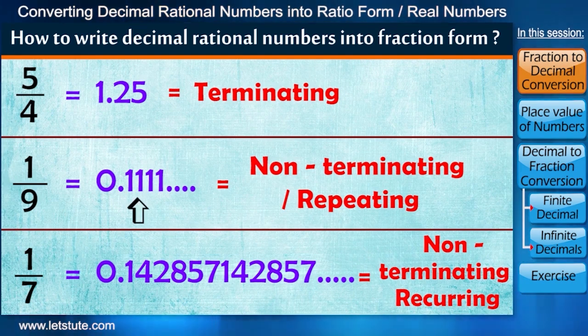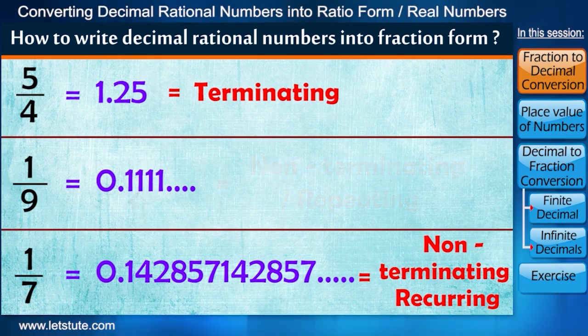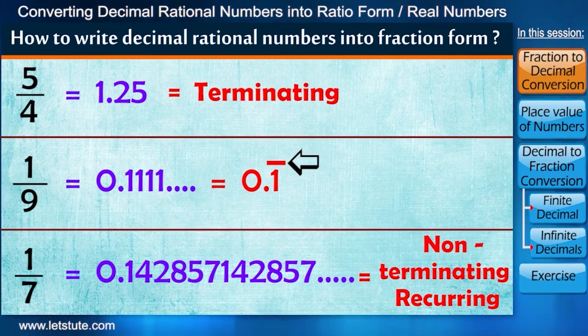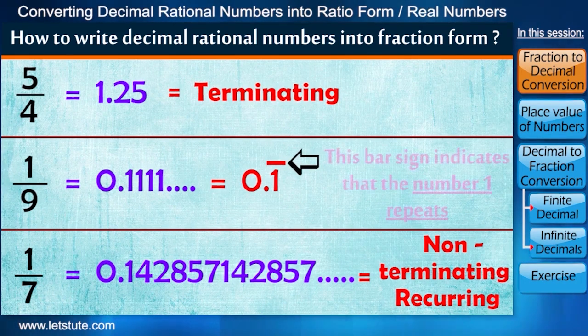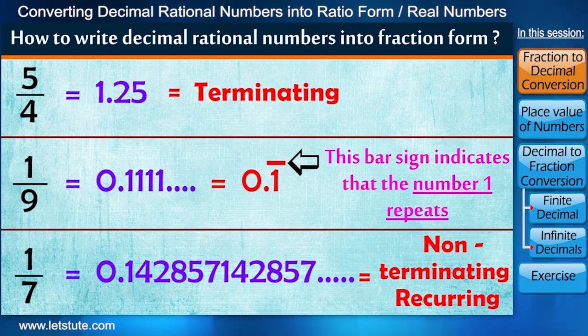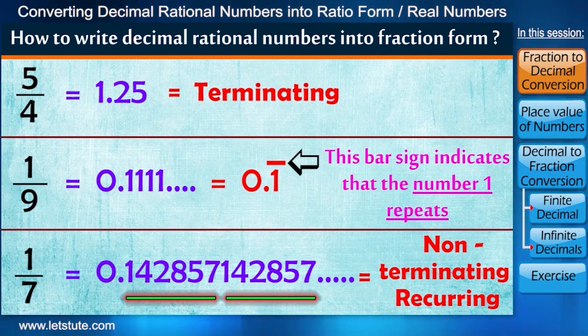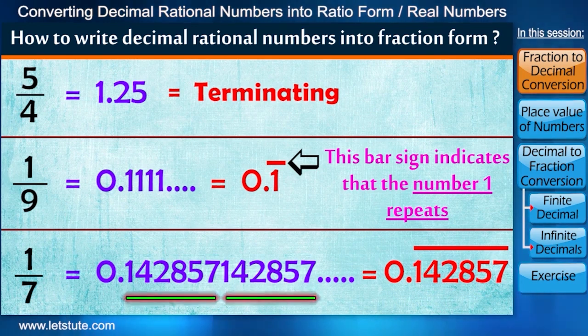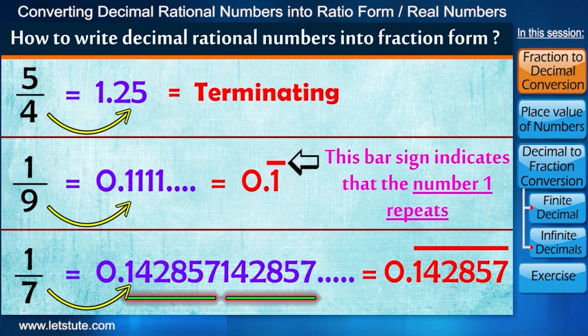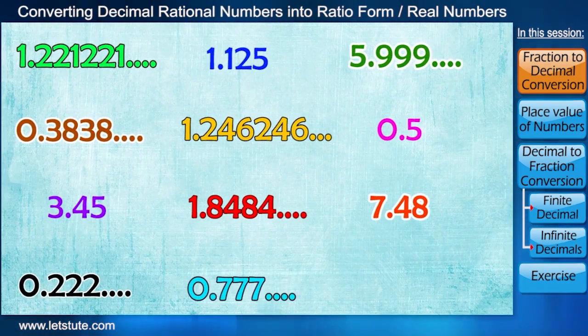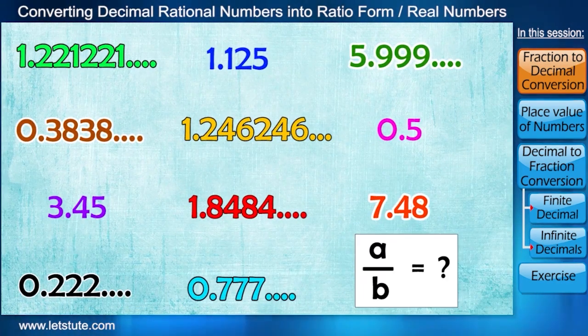And one more thing we need to understand here. We also write 0.1111... as just 0.1 with a bar above one. This bar sign indicates that the number 1 repeats. Same way 0.142857142857... can be written with a bar above 142857 because these digits repeat. So friends, converting a fraction into decimal is very simple task. But this might be a little challenging when we have been given decimal form of rational numbers and asked to write them into ratio form.